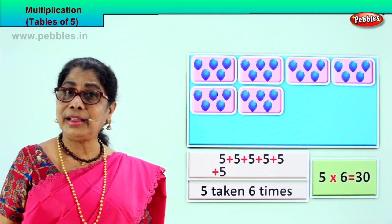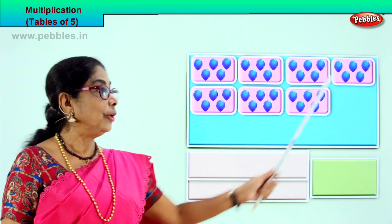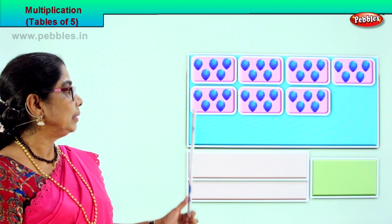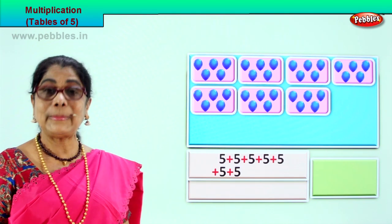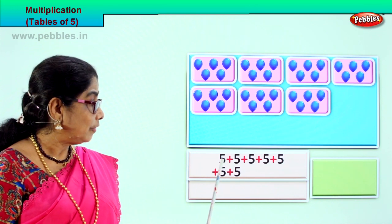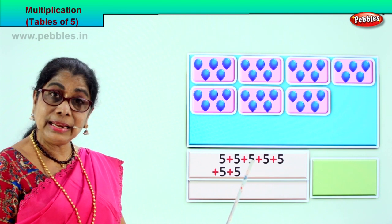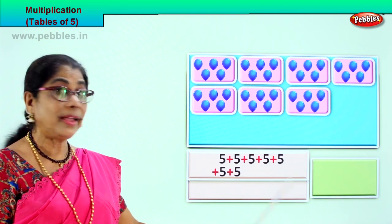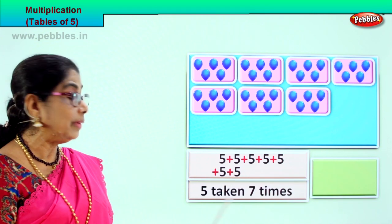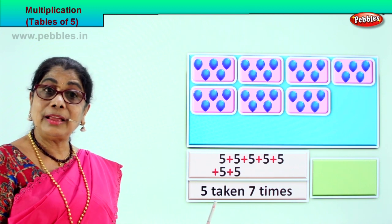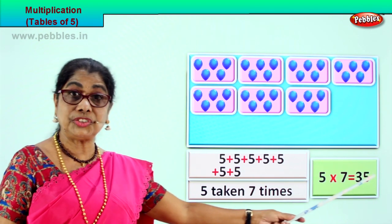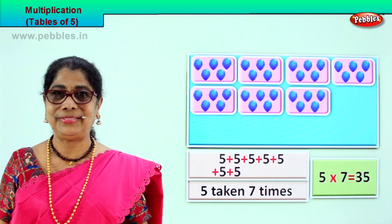Let's look at another grouping of five. One, two, three, four, five, six, seven — there are seven groupings of five. Multiplication is repeated addition, so we add five seven times. Five plus five is ten, plus five is fifteen, plus five is twenty, plus five is twenty-five, plus five is thirty, plus five is thirty-five. Five into seven is thirty-five. Five sevens are thirty-five. Very good.